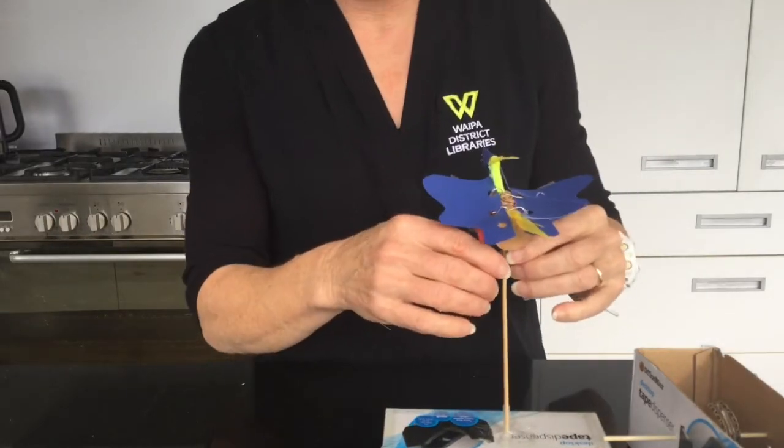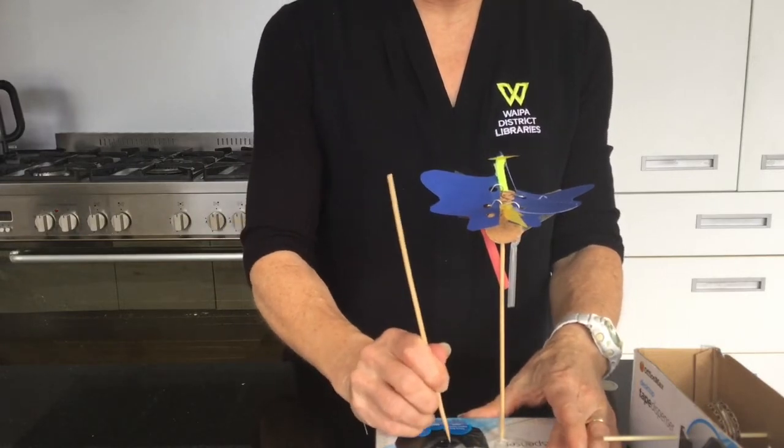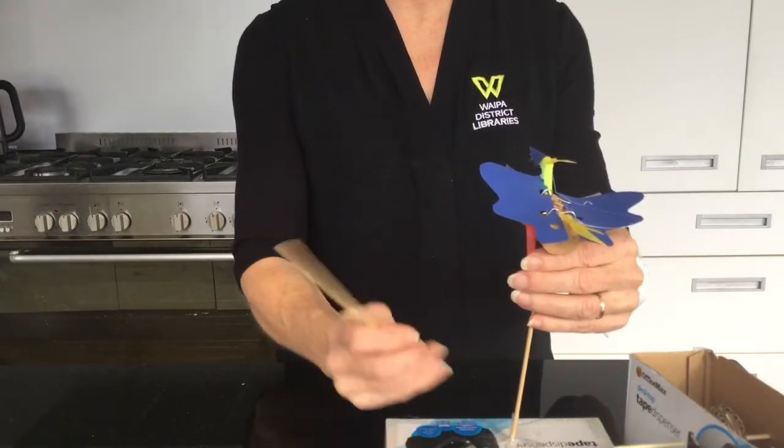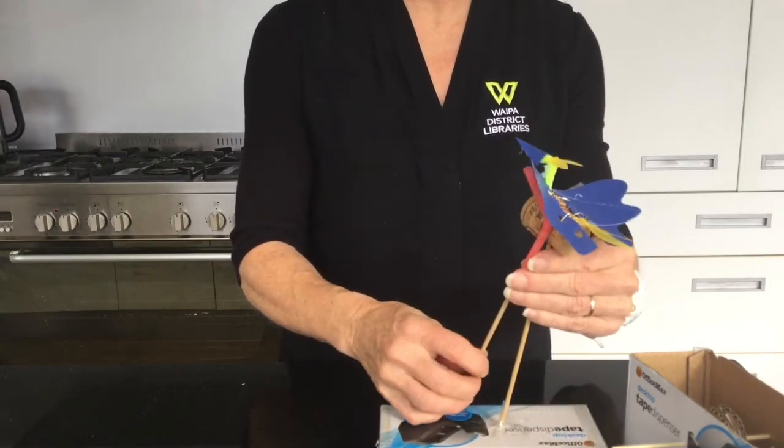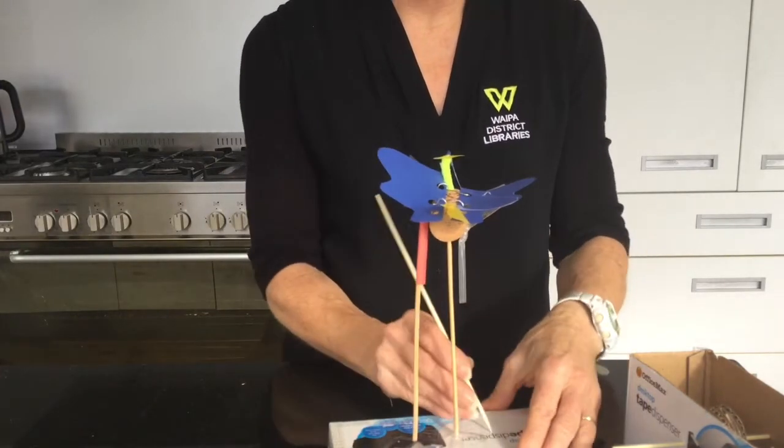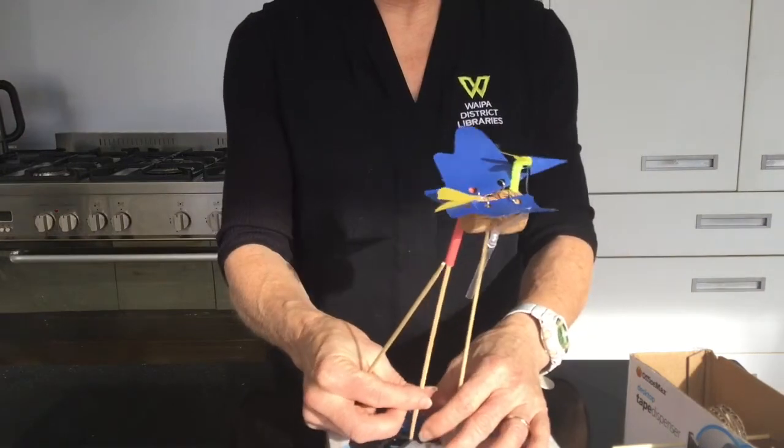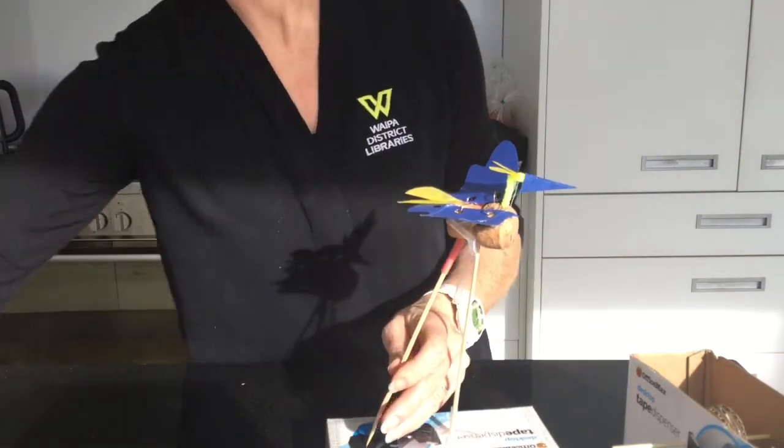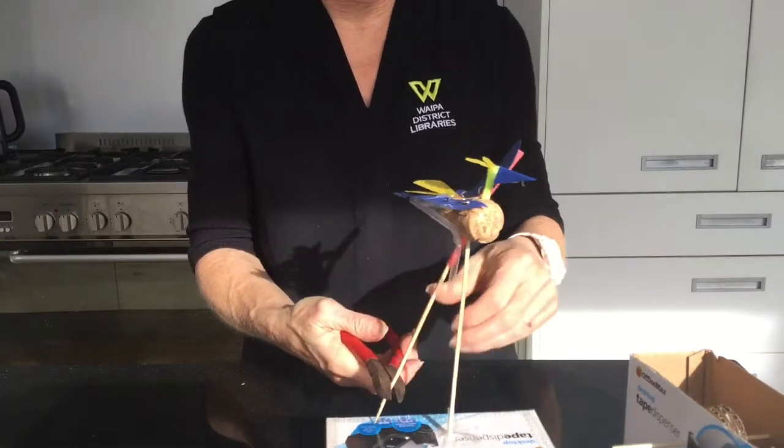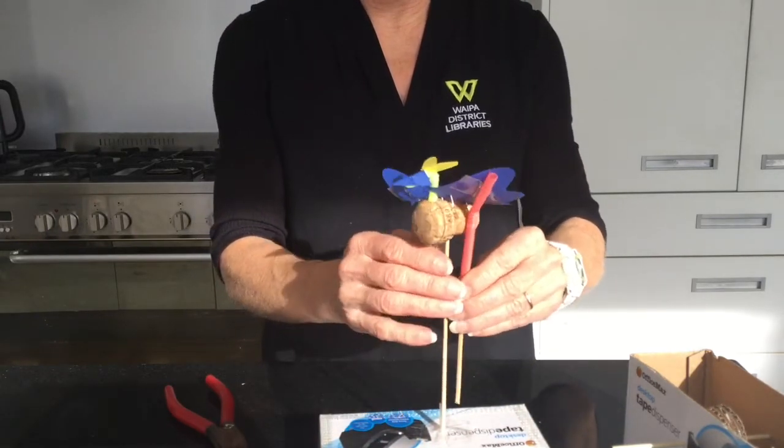Now our next job is to have our two skewers. What we need to do is pop these in the lid as well. We need to feed that onto there and feed that through the box. What I'm actually going to do is I'm going to cut that off a little bit. Get a pair and coat because we want them to actually level with the wings. I'm actually just going to make them a little bit smaller.